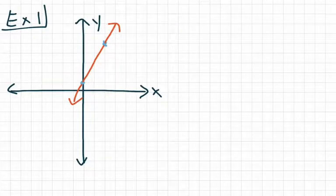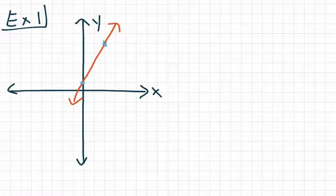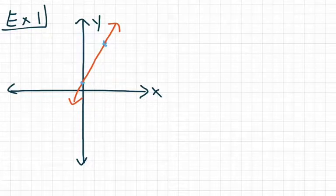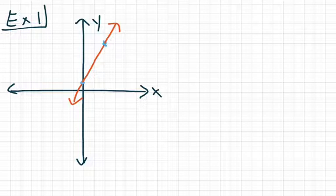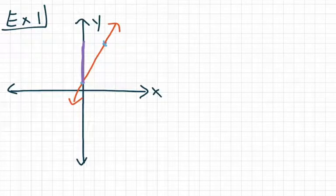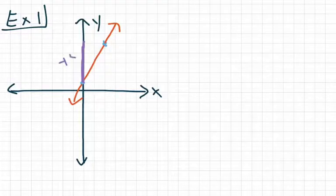For our first example, we have this red line graphed right here. If you remember back to finding slope from a graph, we want to start from the point that's further to the left. We have this point here and this point here — obviously this point is further to the left. From this point, we want to go up or down to get level with the other point, so we need to rise up. I'm going to draw a line representing my rise. I see that I have to travel up 1, 2, 3, 4 grid lines to get level with my other point, so I'm going to give this a value of plus 4.